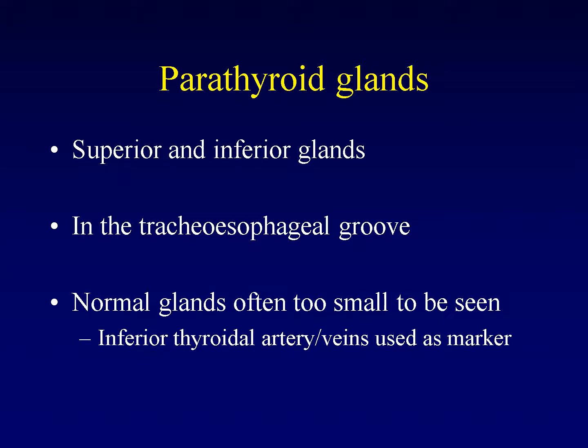The normal glands are often too small to be seen radiologically, so we can use the inferior thyroid artery and veins, which also run in the tracheoesophageal groove, as a marker to the location of the glands.